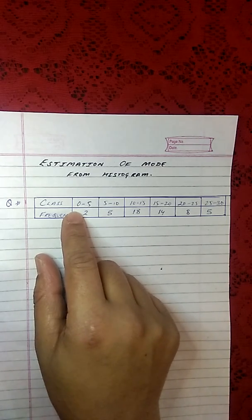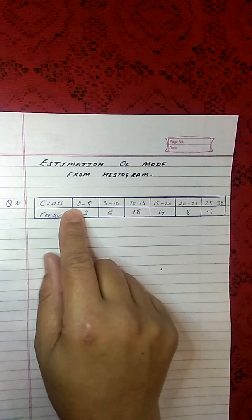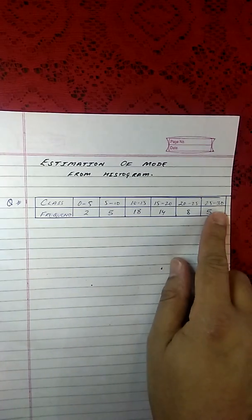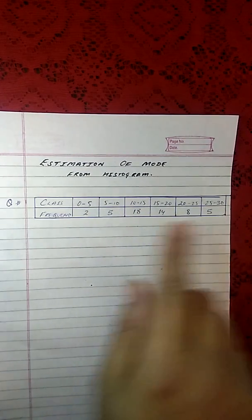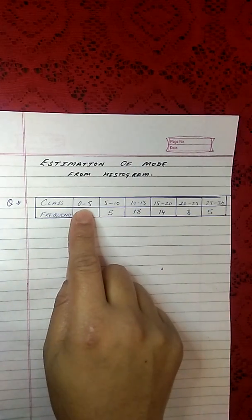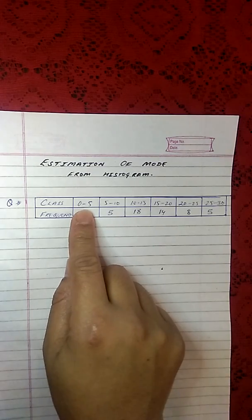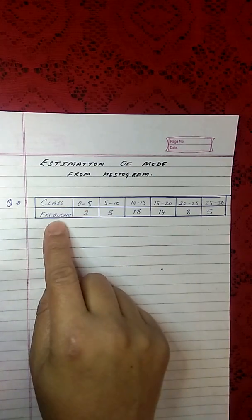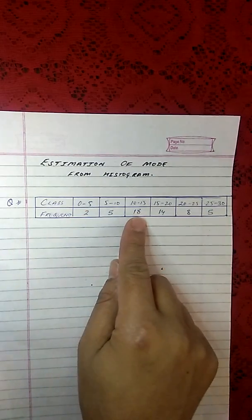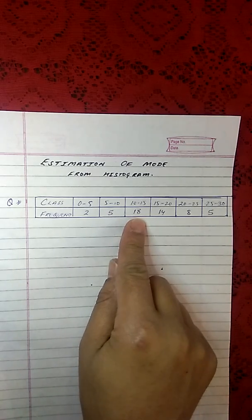Before we proceed, let's look at the range of the class and the highest frequency. The range of this class is from 0 to 30 and each class size is of 5 units. Now we look at the frequency and the highest frequency is 18.